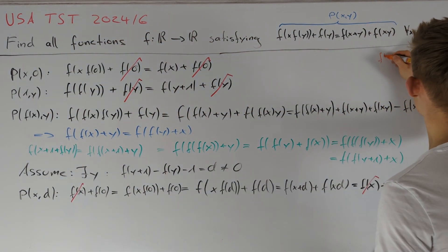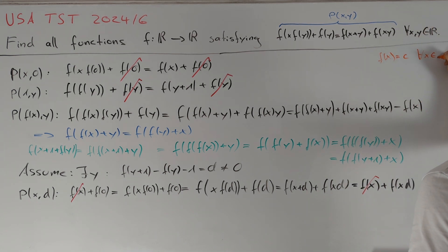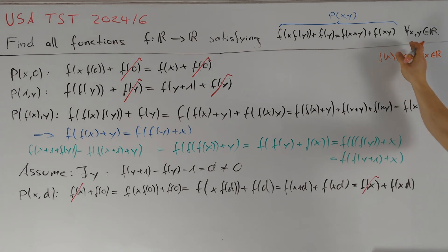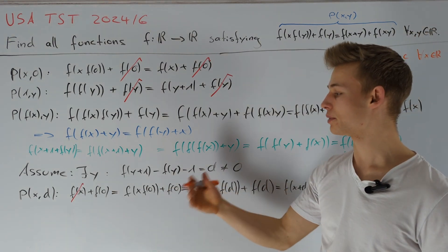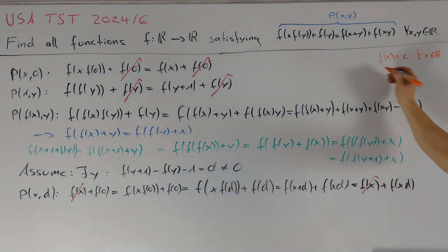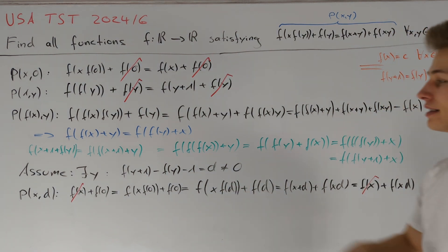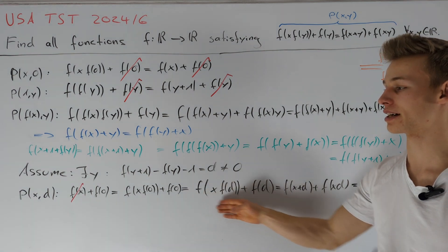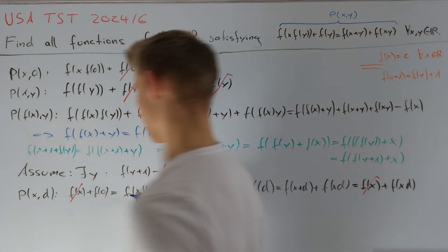So f(x) = c for all x in ℝ, and we can verify this is indeed a solution to our functional equation. If we are not in this case, then f(y+1) must always equal f(y) + 1. We use this together with our earlier argument to evaluate f(0).